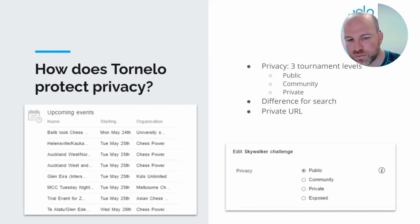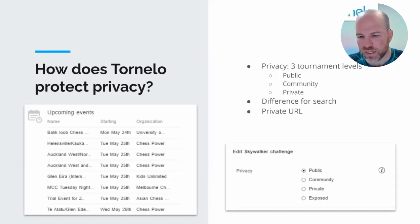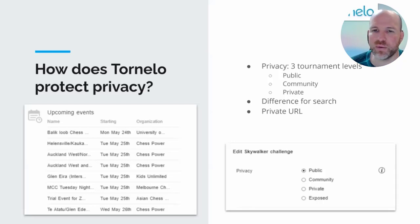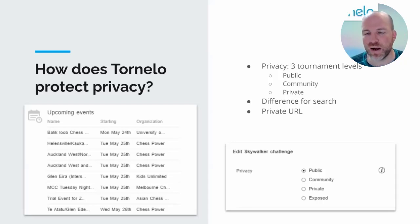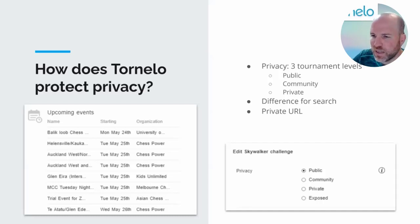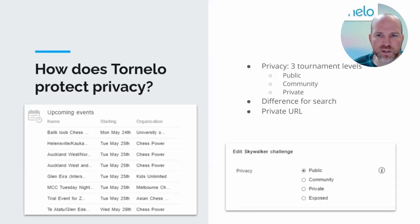To give an example of the difference between community and public events: we have a chess tournament once a month called an RJ Shield, which is a public event because we want as many entries as possible and want it to show up on Google. An interschool competition, however, would be a community tournament — we don't want anybody in the world to just see and jump in. Those events are for a limited set of people, such as schools in a particular region.